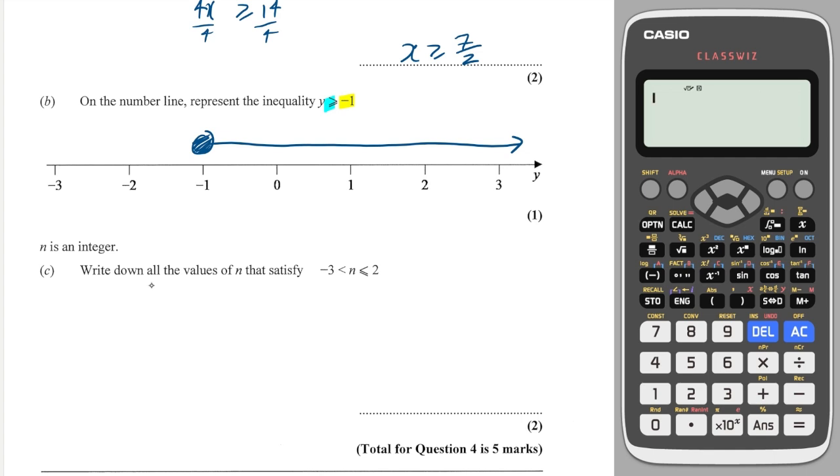Next, this question asks me to write down the values of n which satisfy this inequality. Well, we'll start with minus 3, but we can't have minus 3 because it doesn't equal minus 3. So we go to the next number, which is minus 2, then minus 1, then 0, then 1, and then 2, because it can equal 2, so we have to include it.